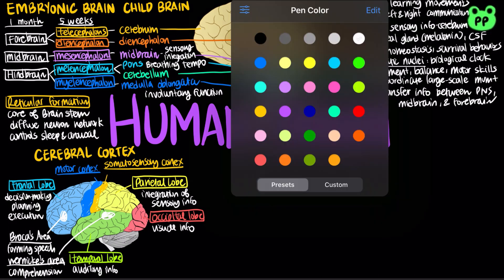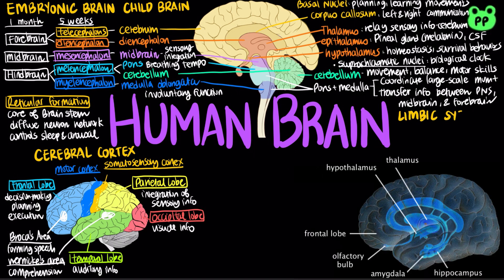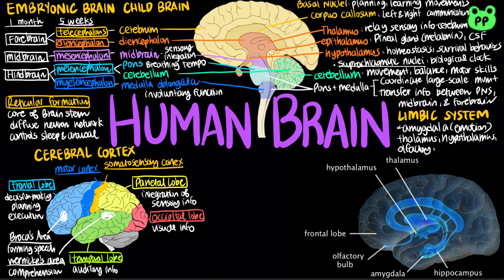Emotions are generated and experienced by the limbic system and other parts of the brain, including the sensory areas. The limbic system is a ring of structures around the brainstem that includes the amygdala, hippocampus, parts of the thalamus and hypothalamus, and the olfactory bulb. The amygdala is located in the temporal lobe and helps store an emotional experience as an emotional memory.